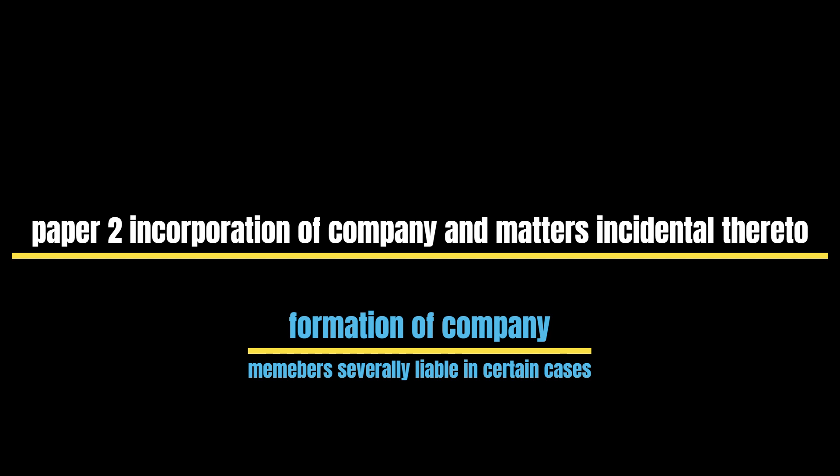Under Limited by Shares, there are two types: Public and Private. Under Limited by Guarantee, there are two subcategories: With Capital and Without Capital. Under With Capital, there are Public and Private companies. Under Without Capital, there are also Public and Private companies.